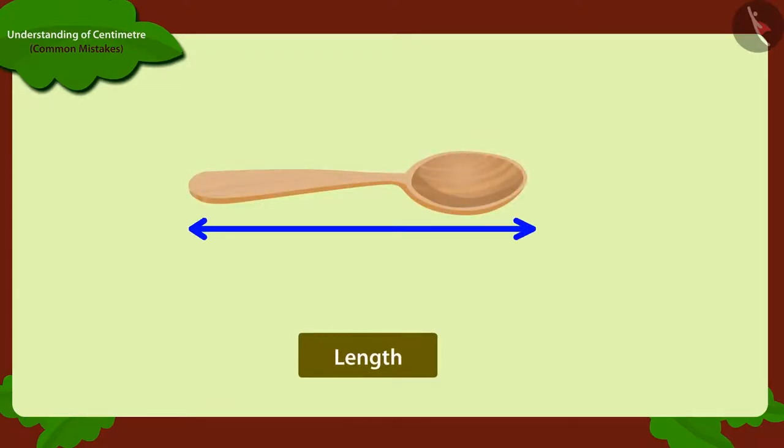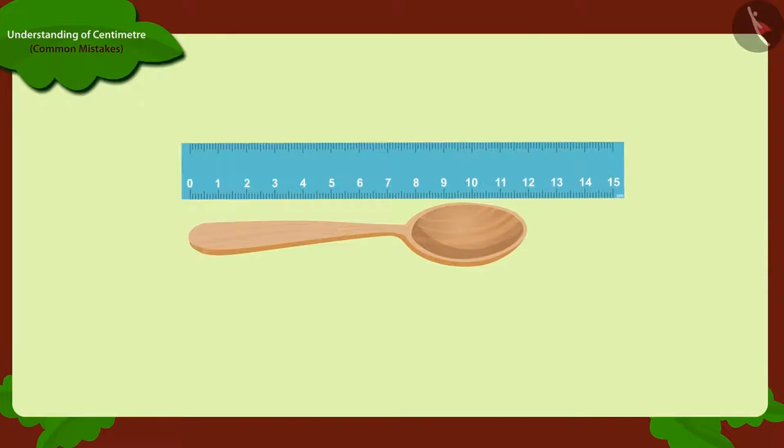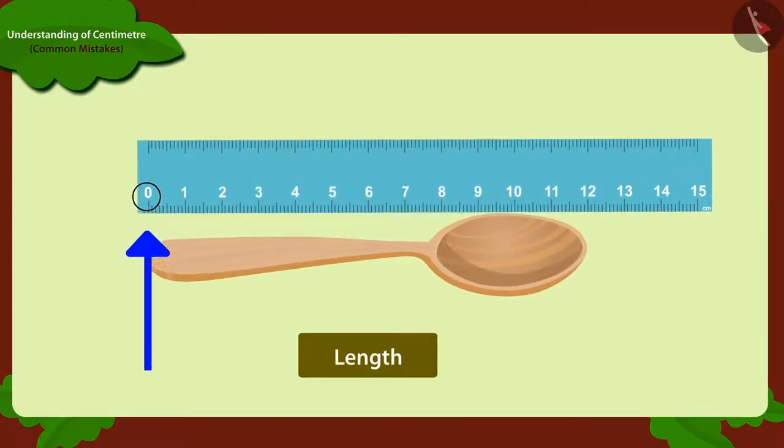Keep in mind, kids, whenever we are measuring the length of any object with a ruler, we should always keep in mind that we start measuring the length by the 0 number.